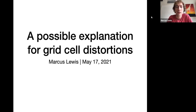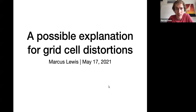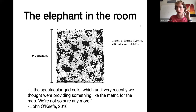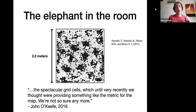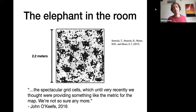I'm calling this a possible explanation for grid cell distortions. First, some background on why I'm talking about grid cell distortions. Here is a picture of what grid cells do in a somewhat large box - a 2.2 meter by 2.2 meter box, larger than the original boxes used in the 2005 seminal grid cell paper, which used about a one meter by one meter box.